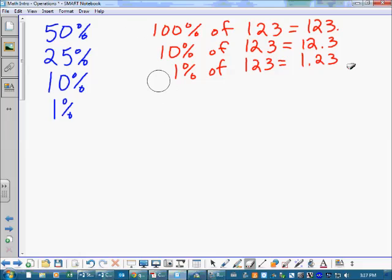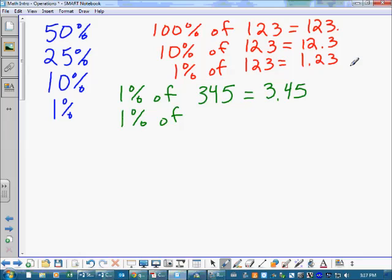Okay, so let's do a couple practice ones here. Let's do 1% of 345. What is that? 3 and 45 hundredths. What is 1% of 65 and 7 tenths? What's 1% of that? You bet, 1 and 657 thousandths. See, we're just moving the decimal two places, right? Every single time.